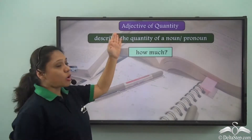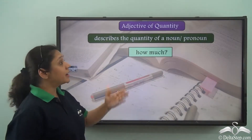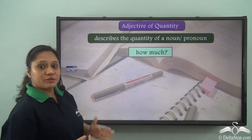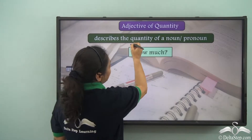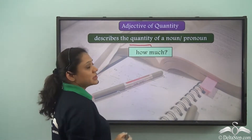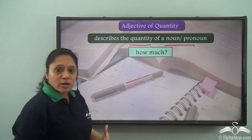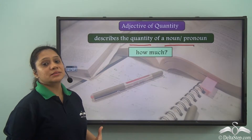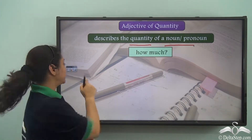So what is an adjective of quantity? An adjective of quantity describes the quantity of a noun or a pronoun and always answers the question 'how much?'